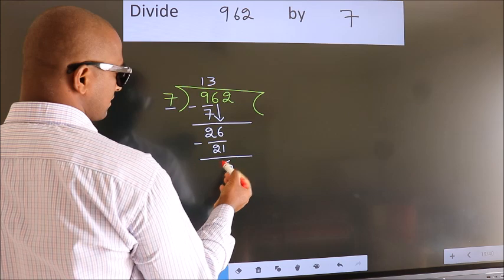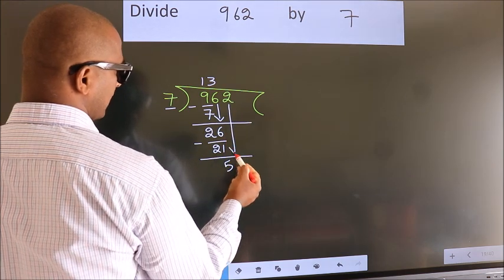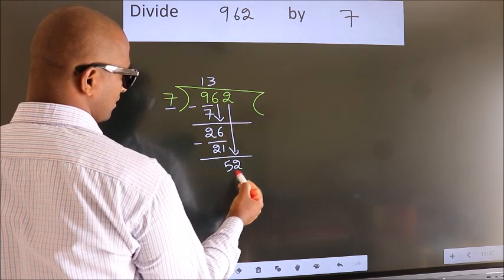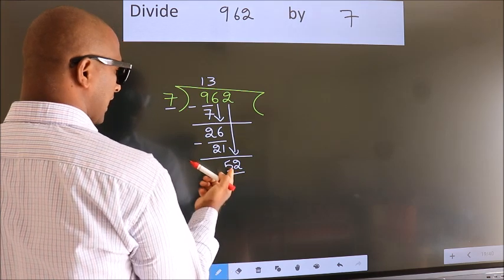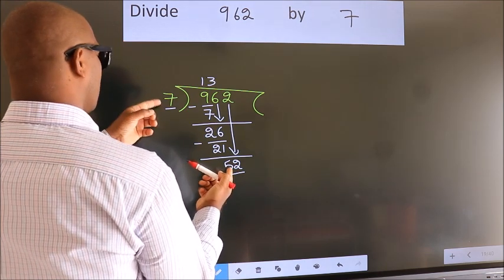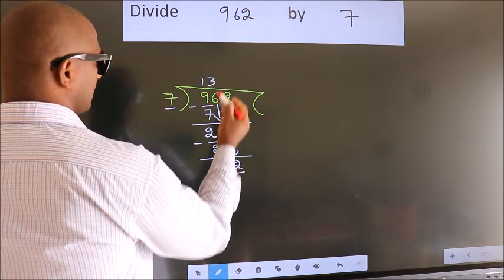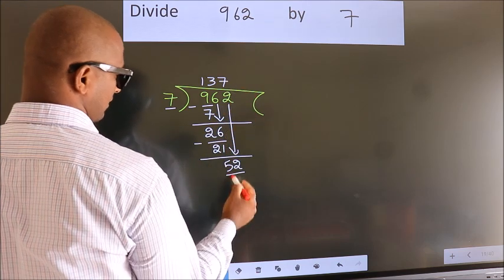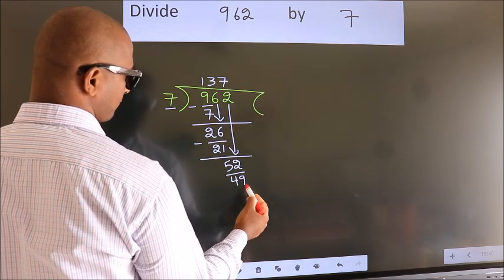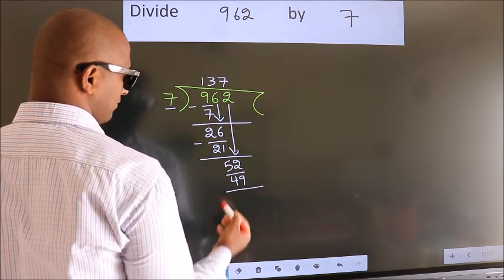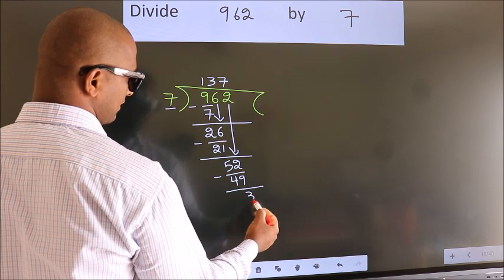After this, bring down the beside number. So, 2 down, giving us 52. A number close to 52 in the 7 table is 7 sevens, 49. Now, we subtract. We get 3.